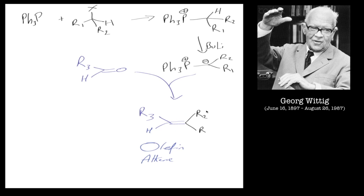Okay, so we have triphenylphosphine. This reacts with an alkyl halide to give this intermediate here, this phosphonium intermediate, which then reacts with a base. Upon addition of the base, in this case it's butyl lithium, it's quite a strong base, to form this ylide intermediate.